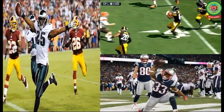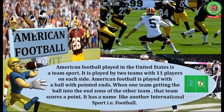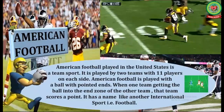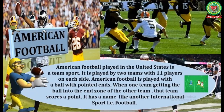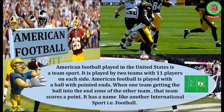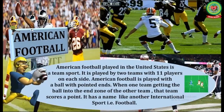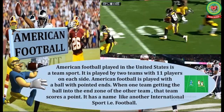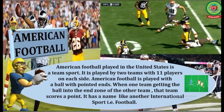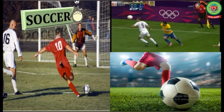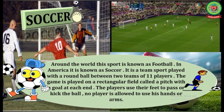Number two is American football. American football, played in the United States, is a team sport played by two teams with eleven players on each side. American football is played with a ball with pointed ends. When one team gets the ball into the end zone of the other team, that team scores a point. It has a name like another international sport, that is football.